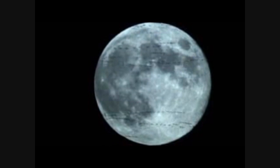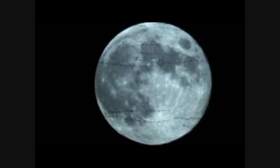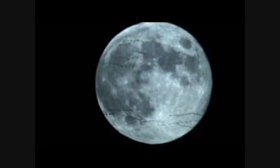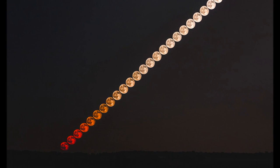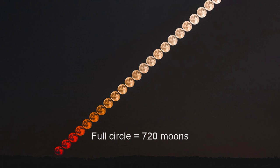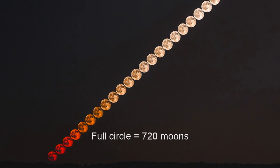As I mentioned at the start, the size and distance that the Moon is from us means that placed side by side, it would take 720 moons to fill a giant ring with us at the centre.